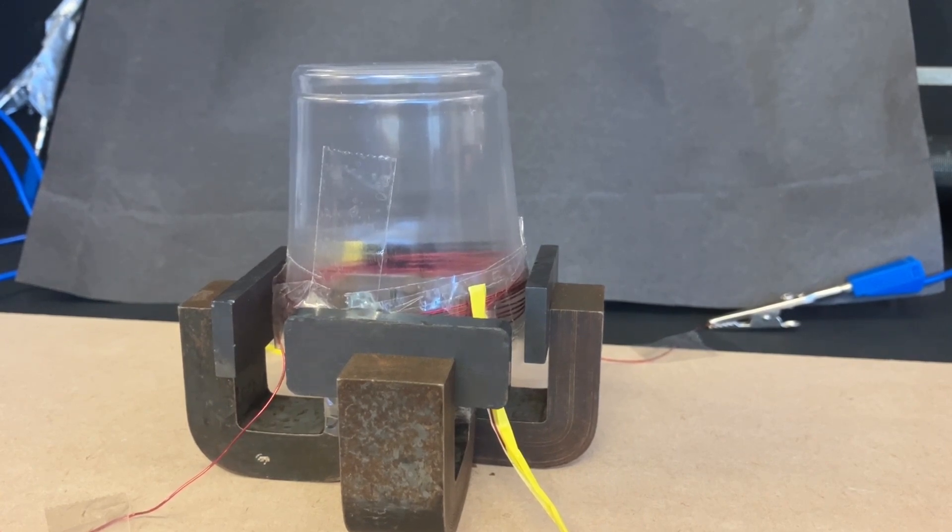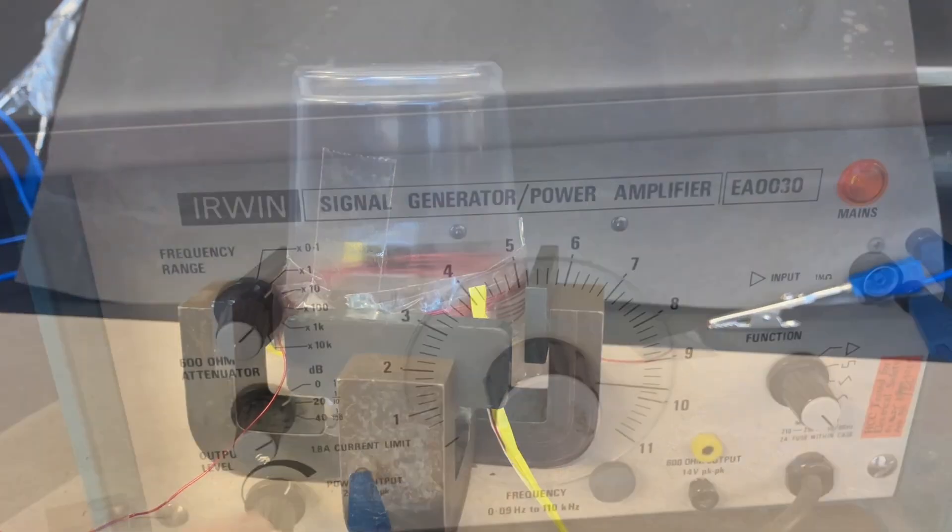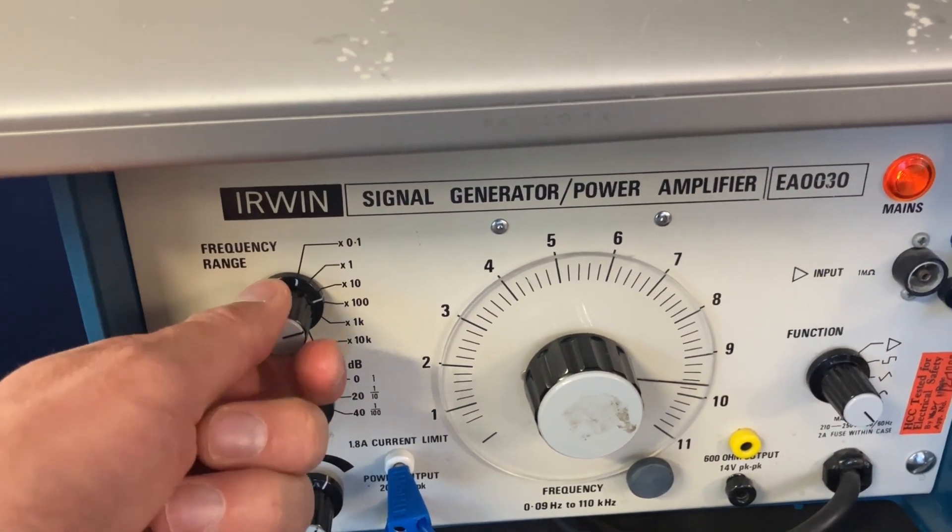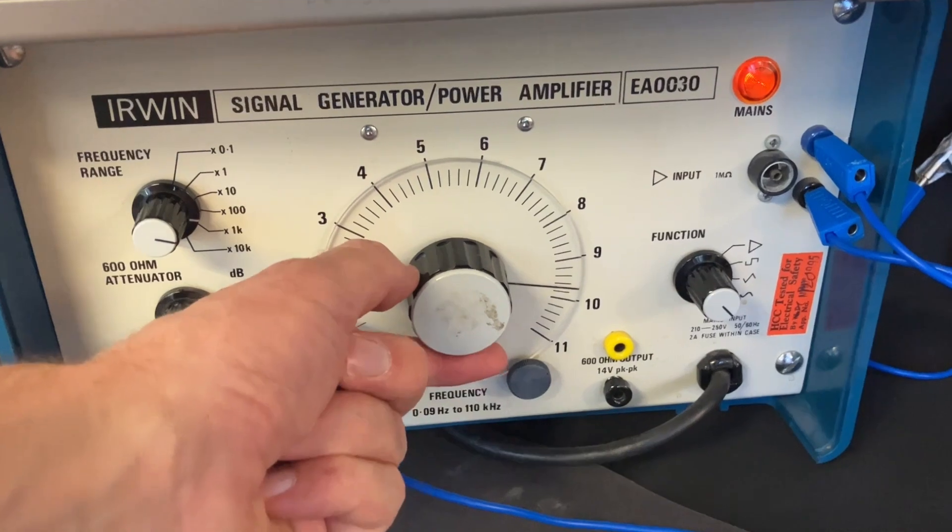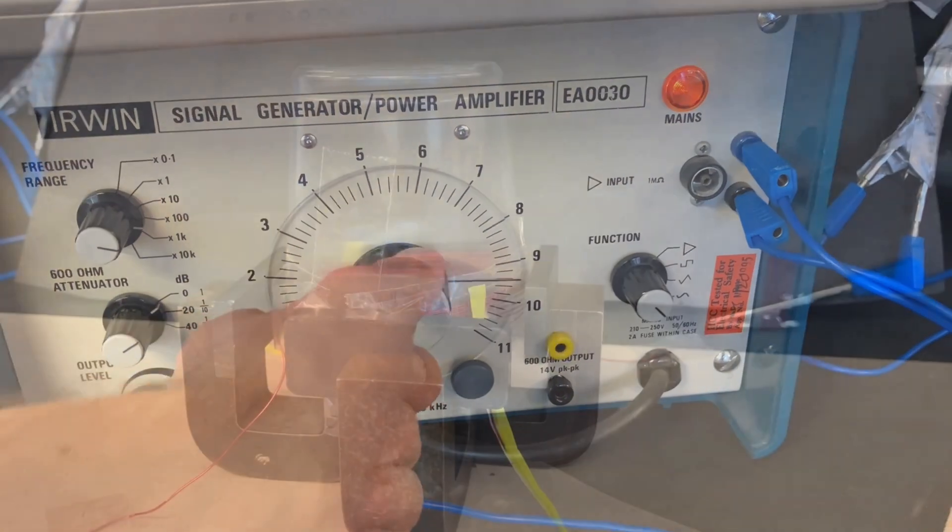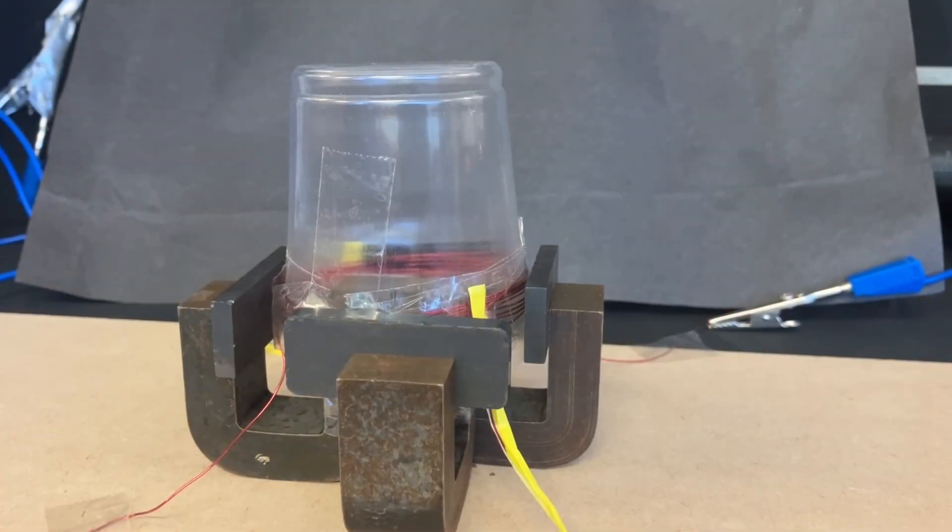Increasing the frequency by a factor of 10 we can see it vibrating even more. If we now adjust the frequency into the hundreds or kilohertz range we can hear the frequency of sound that it is now producing.